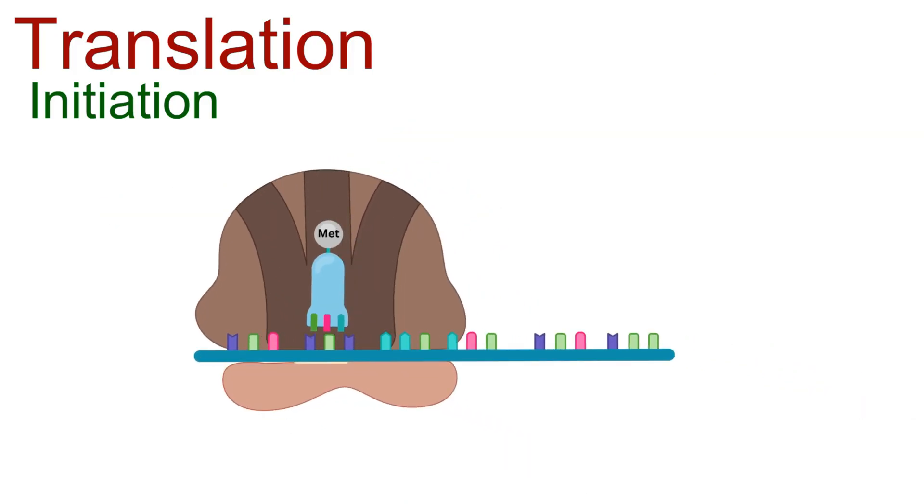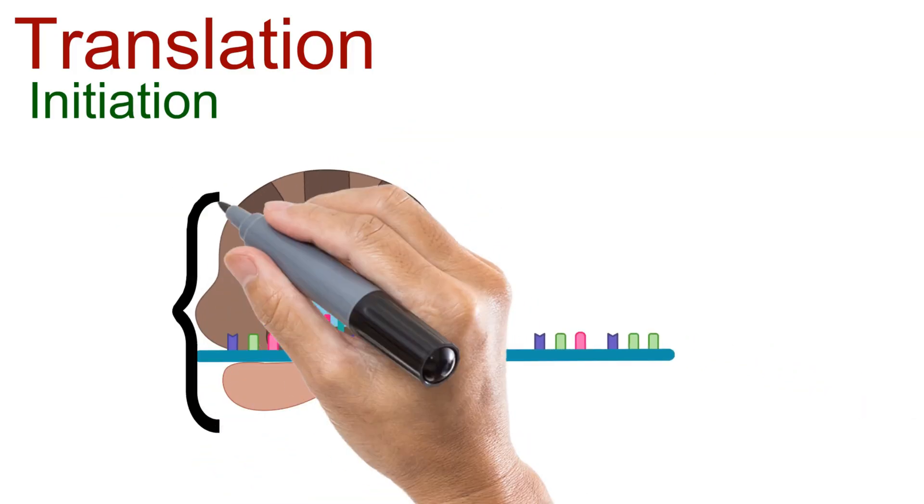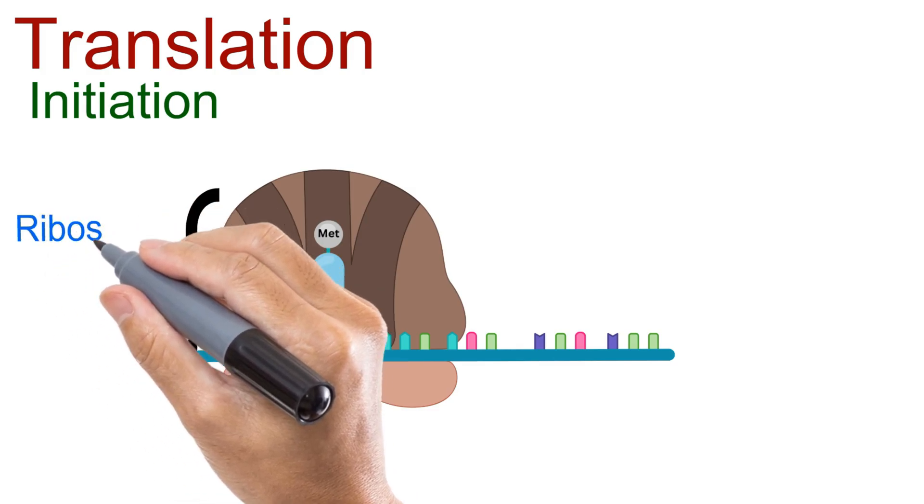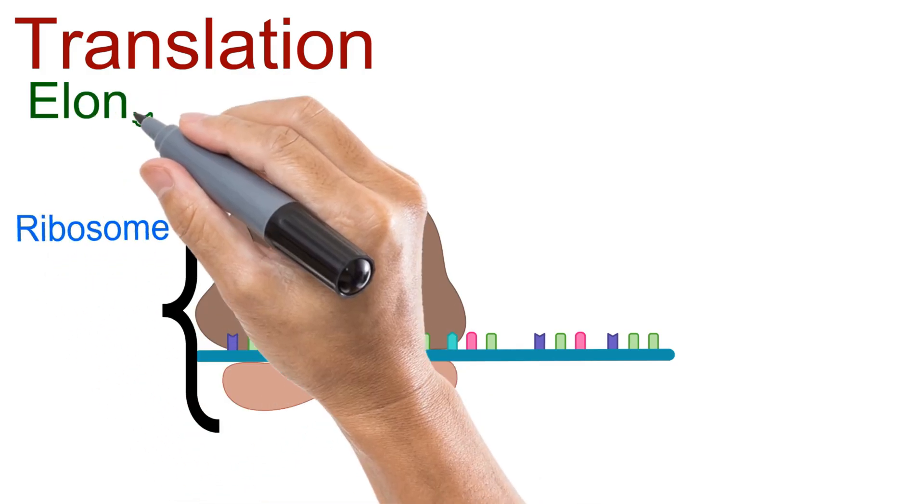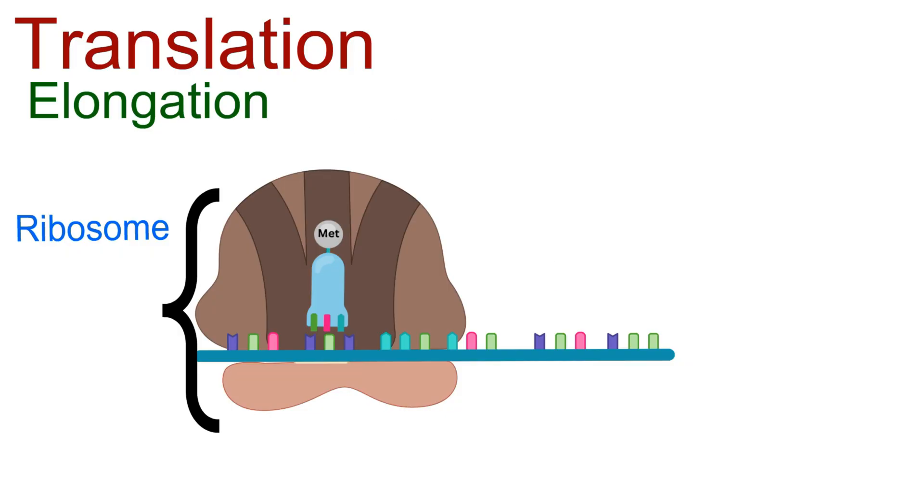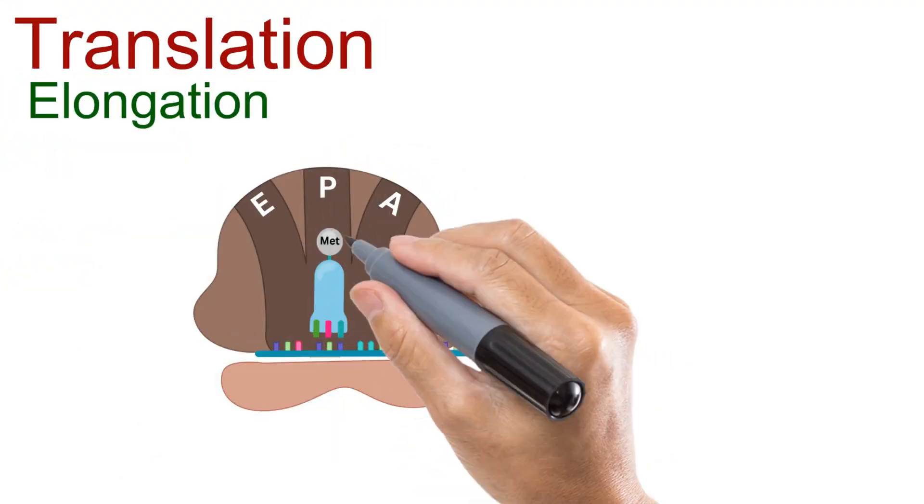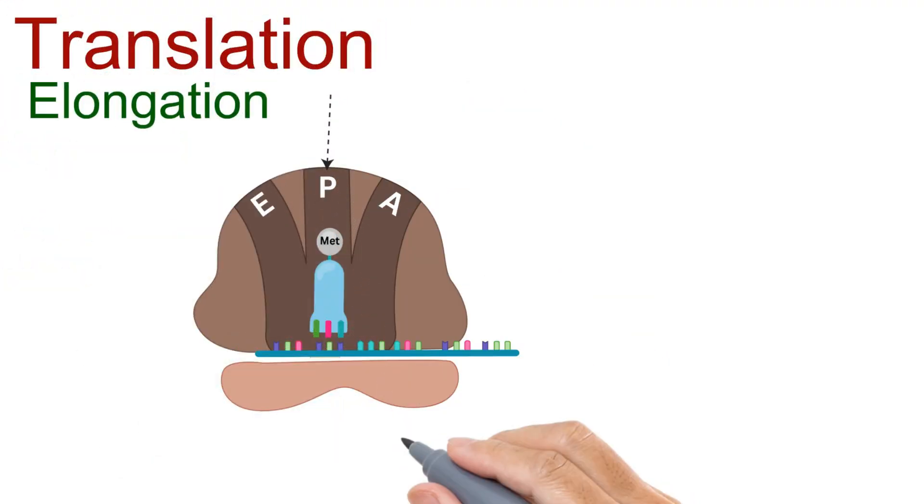Once the initiation complex is ready, the ribosome begins the actual process of building the protein chain. Here's how elongation works step by step. After the start codon is set at the P site, the ribosome reads the next codon on the mRNA.